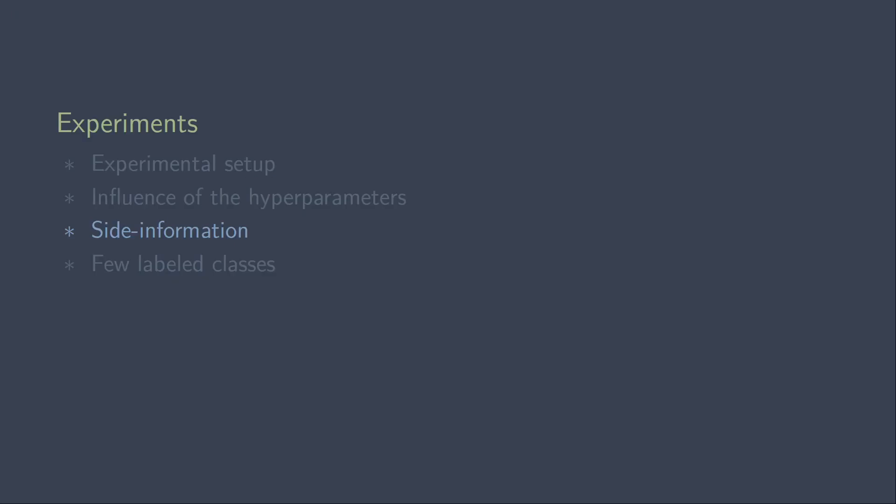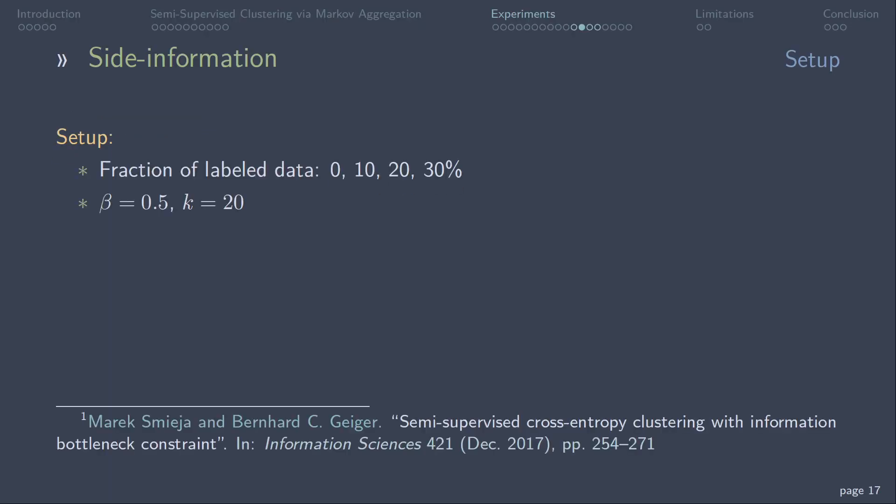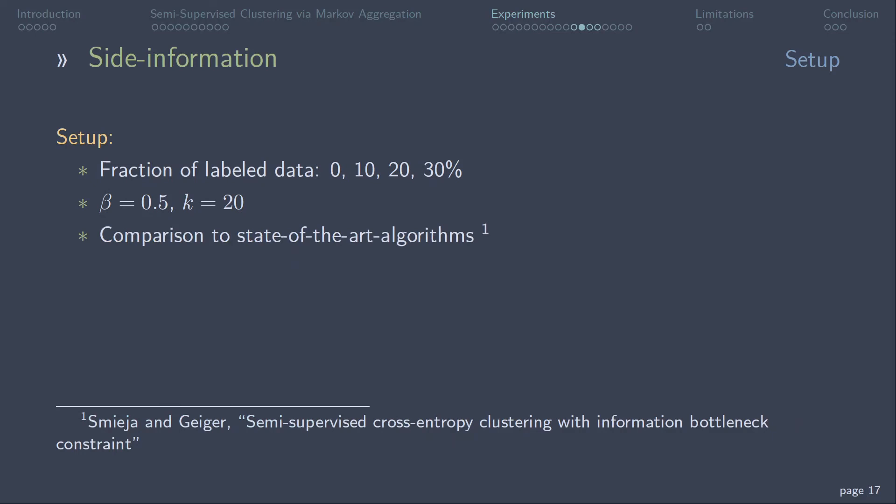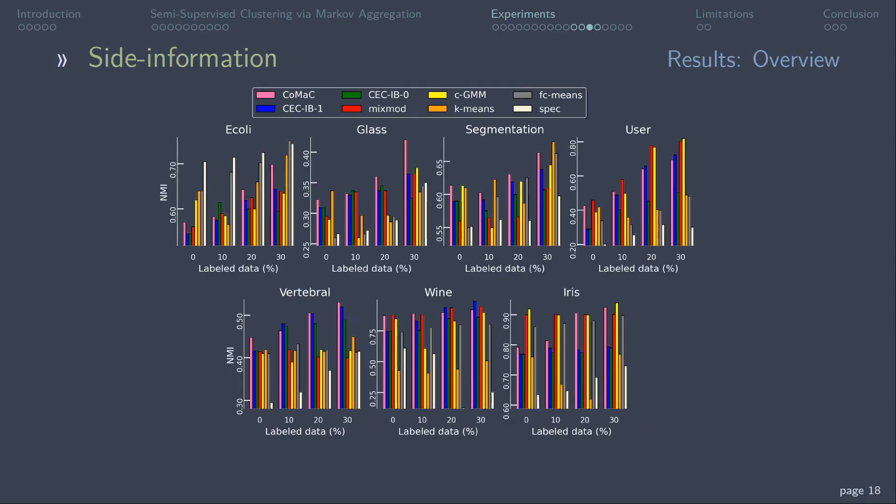Next, we look at the performance of our algorithm compared to state-of-the-art clustering algorithms for different fractions of labeled data points. Beta is fixed as 0.5 and k as 20. In this experiment, we are interested in the influence of the labeled data on accuracy compared to other methods. Here, you can pause the video to look at the results for all datasets. Overall, our COMAC algorithm clearly benefits from pairwise constraints and can compete with the other algorithms.